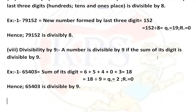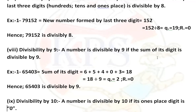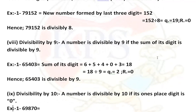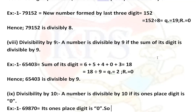Next is the divisibility rule of 10. Which numbers are divisible by 10? A number is divisible by 10 when its ones place digit is 0. For example, 69,870 has ones place digit 0, so 69,870 is divisible by 10.